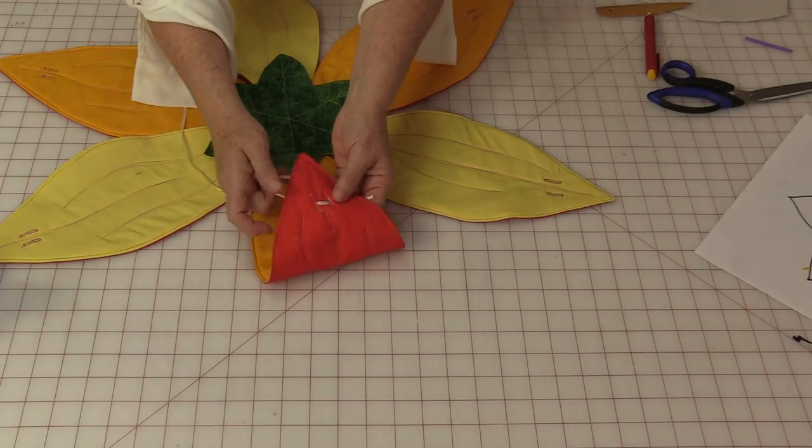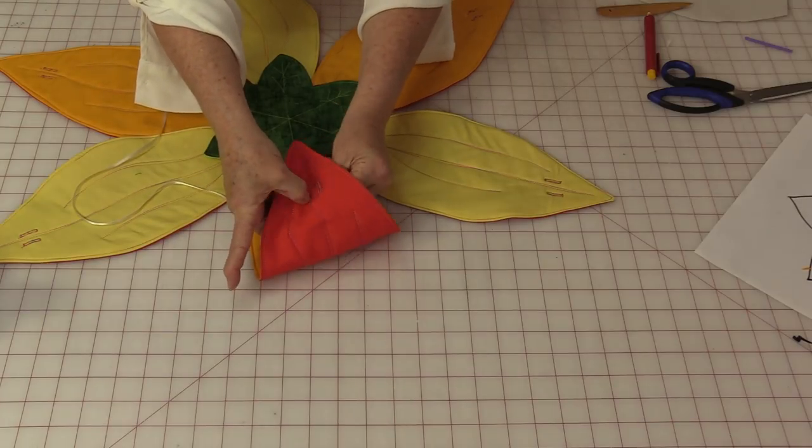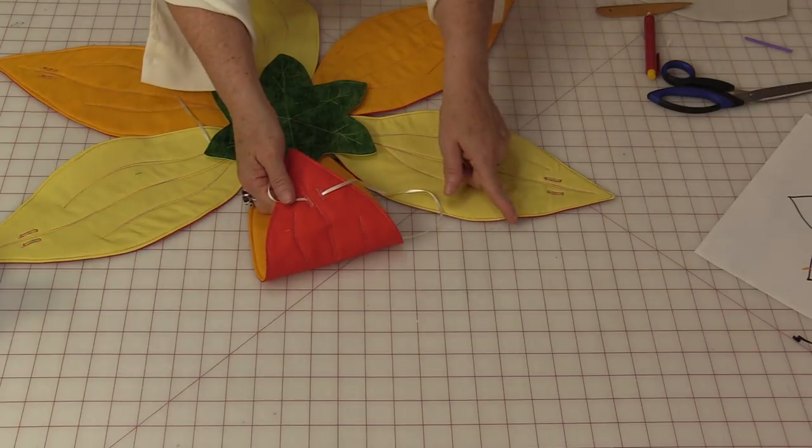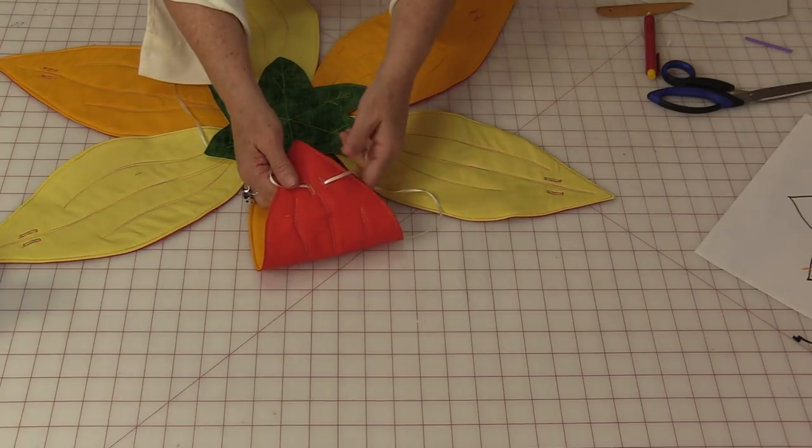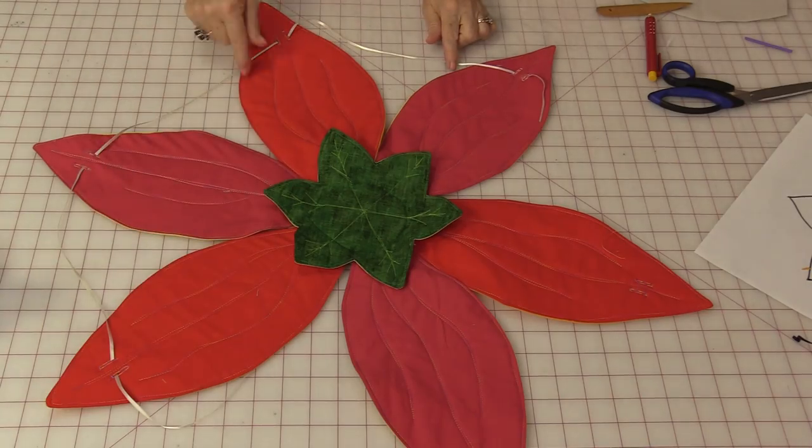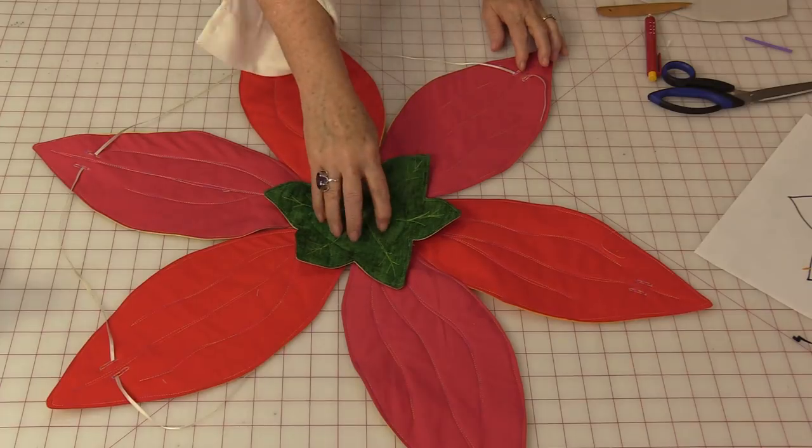If you want it the other way, you're going to have to put the ribbon in the opposite way. This now will be the inside. You need to do that for all of the petals. You can pull them up as you go along. All the ribbon is in the same direction.